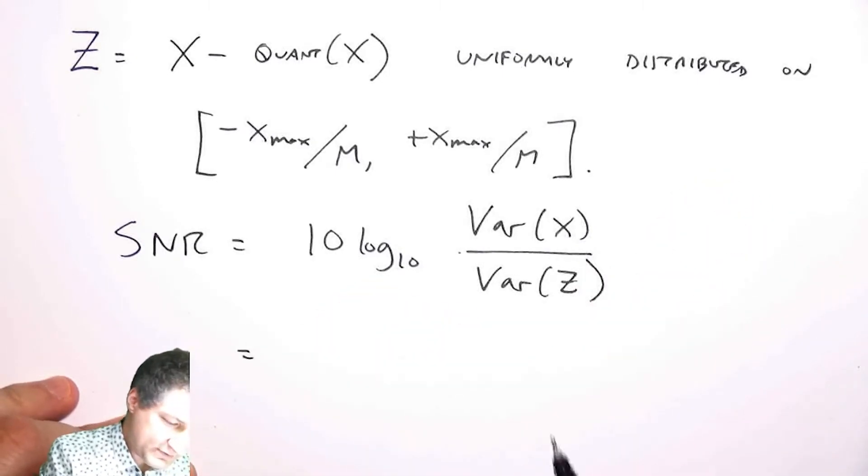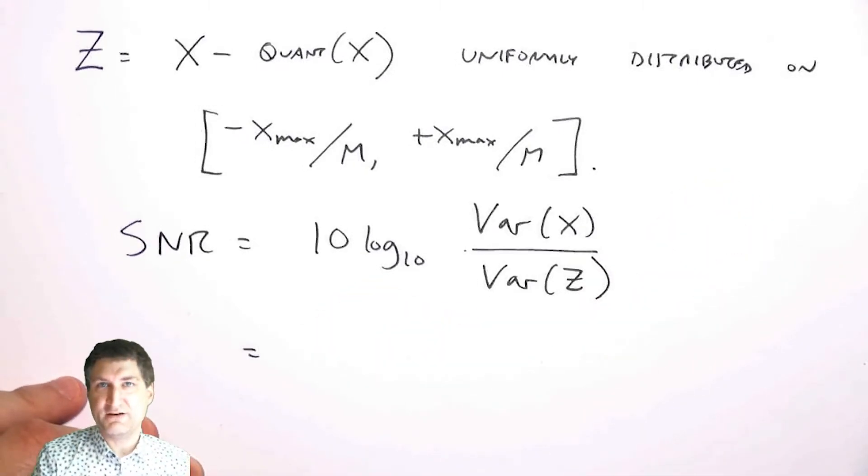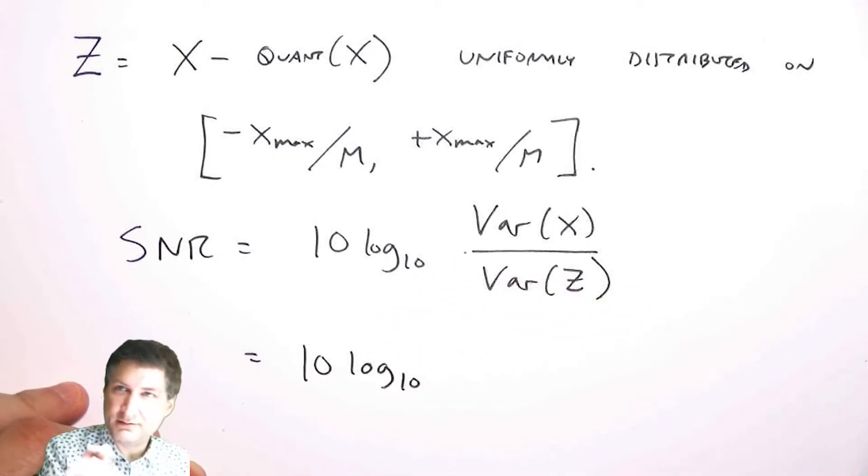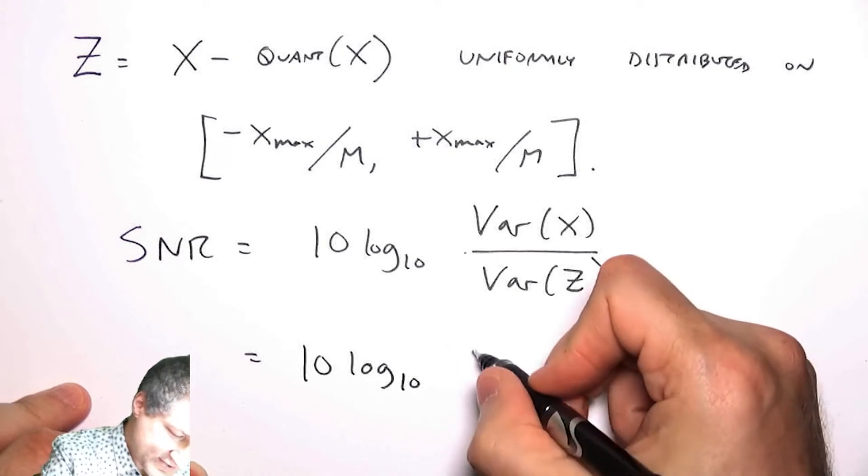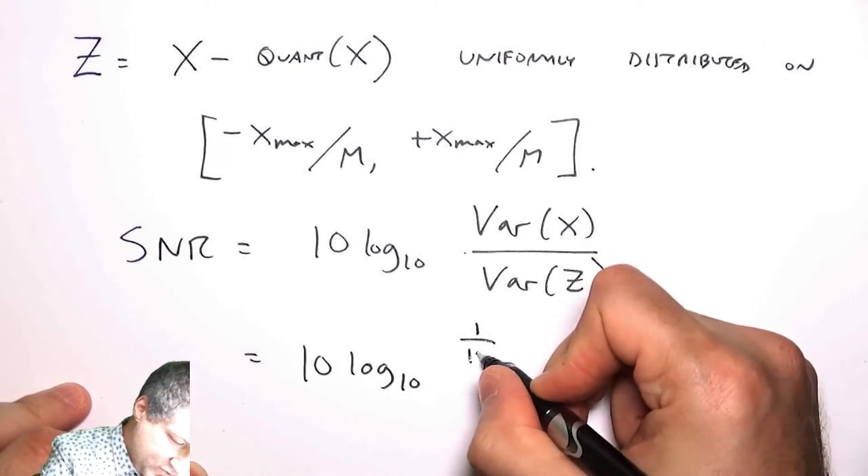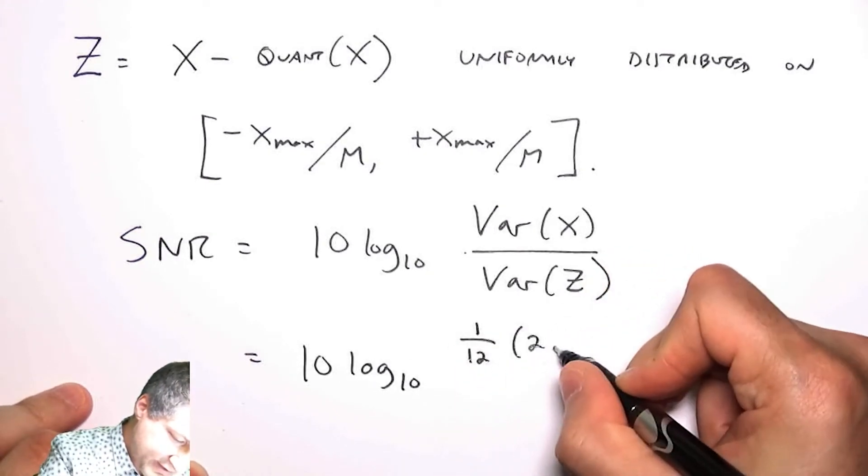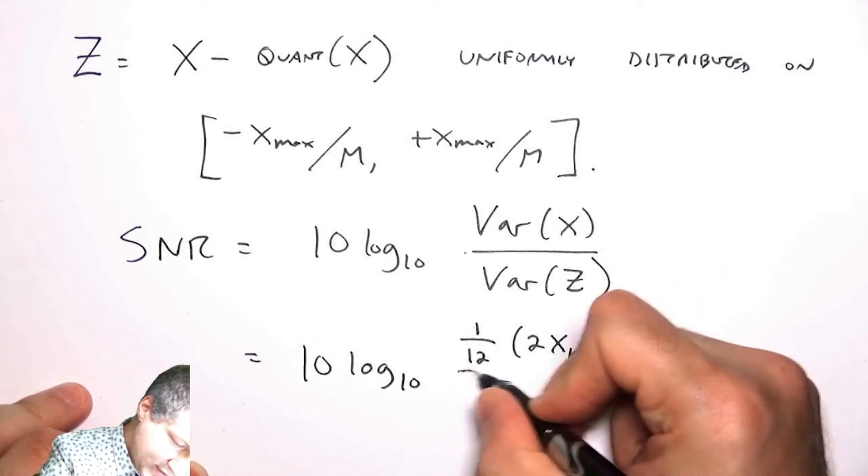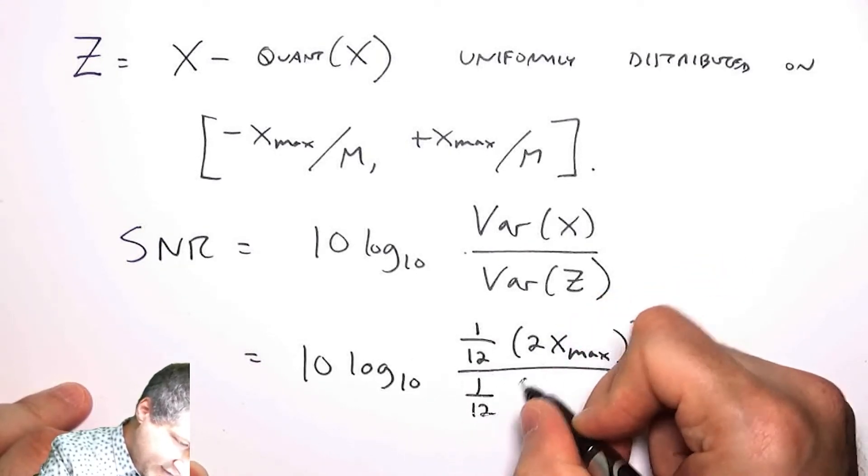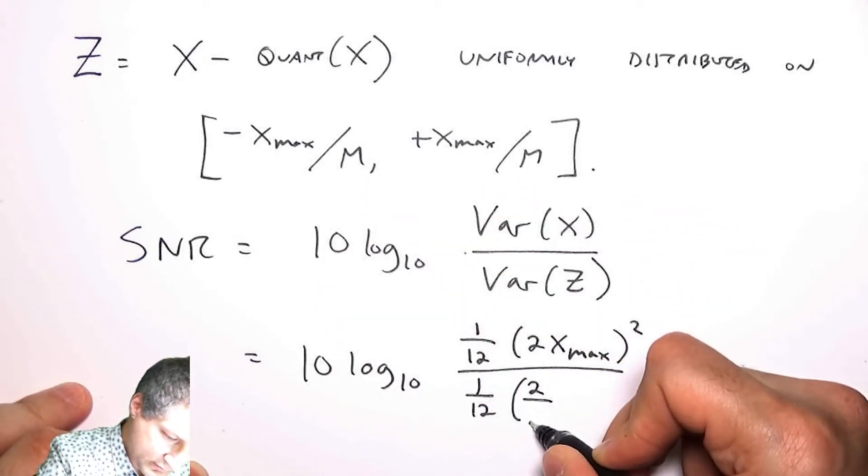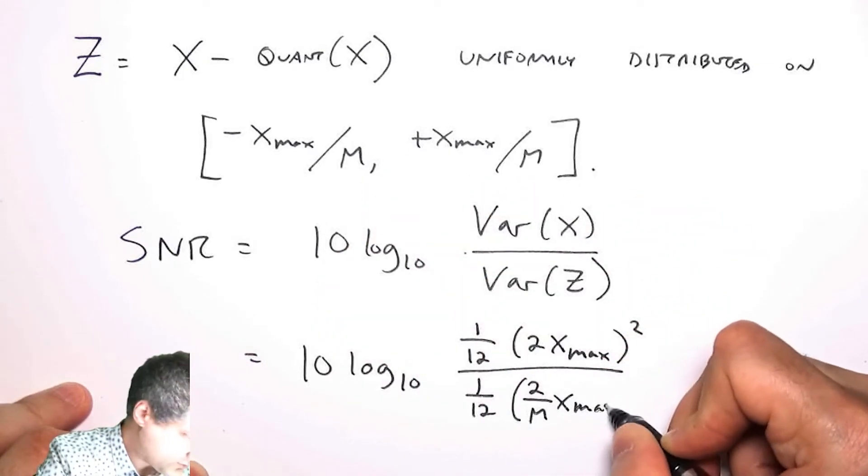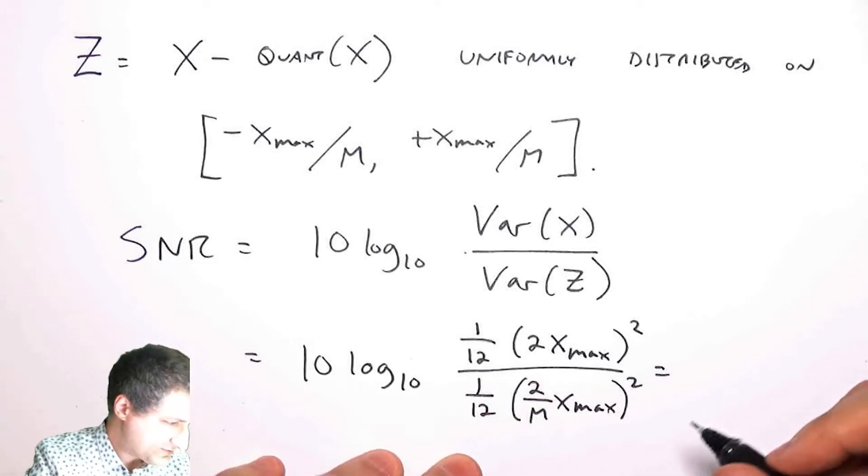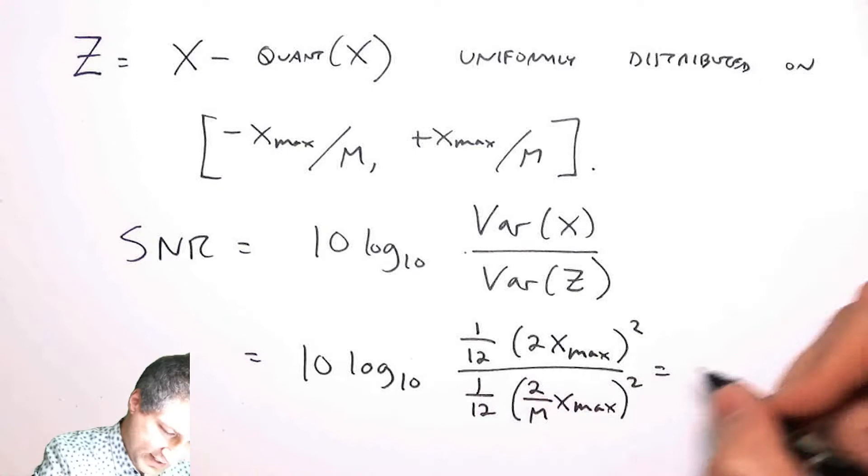Now in a previous lecture we computed what was the variance of a uniform random variable. That was something that we figured out, it was this 1/12 (b minus a) squared. So in our case what we have is the numerator is 1/12 the length of the interval overall squared. The bottom is 1/12 the length of this interval squared.